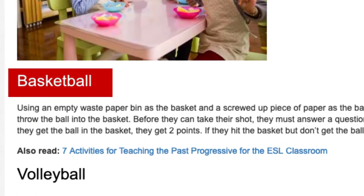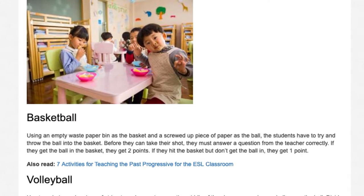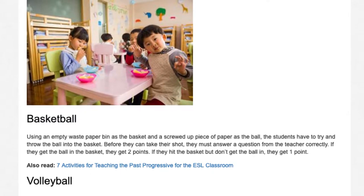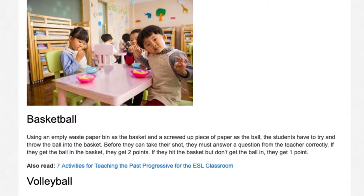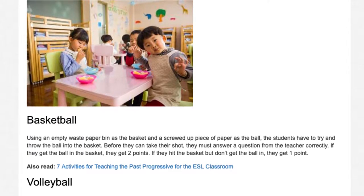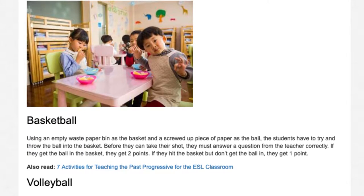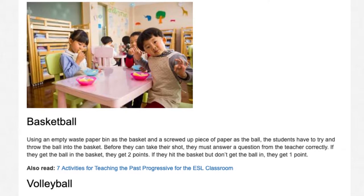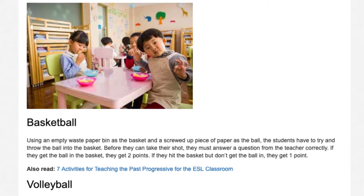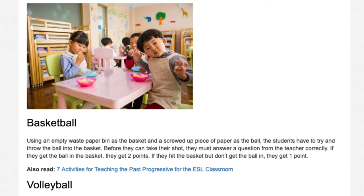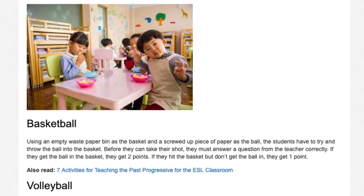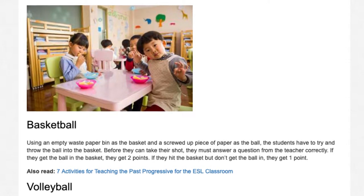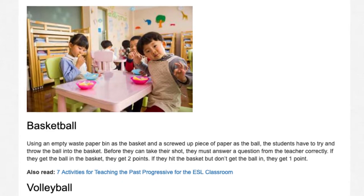Basketball. Using an empty waste paper bin as the basket and a screwed up piece of paper as the ball, students have to try and throw the ball into the basket. Before they can take their shot, they must answer a question from the teacher correctly. If they get the ball in the basket, they get two points. If they hit the basket but don't get the ball in, they get one point.